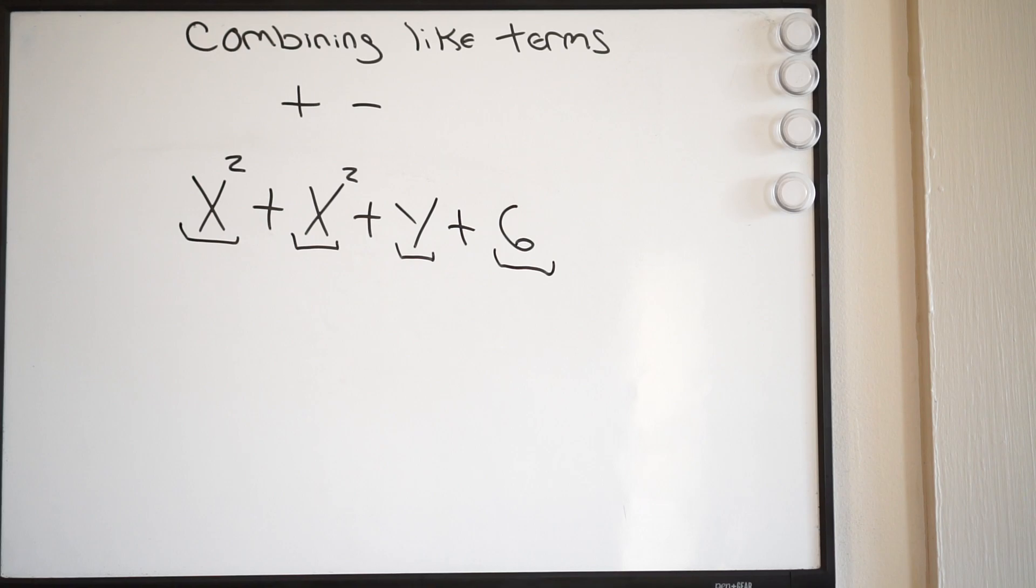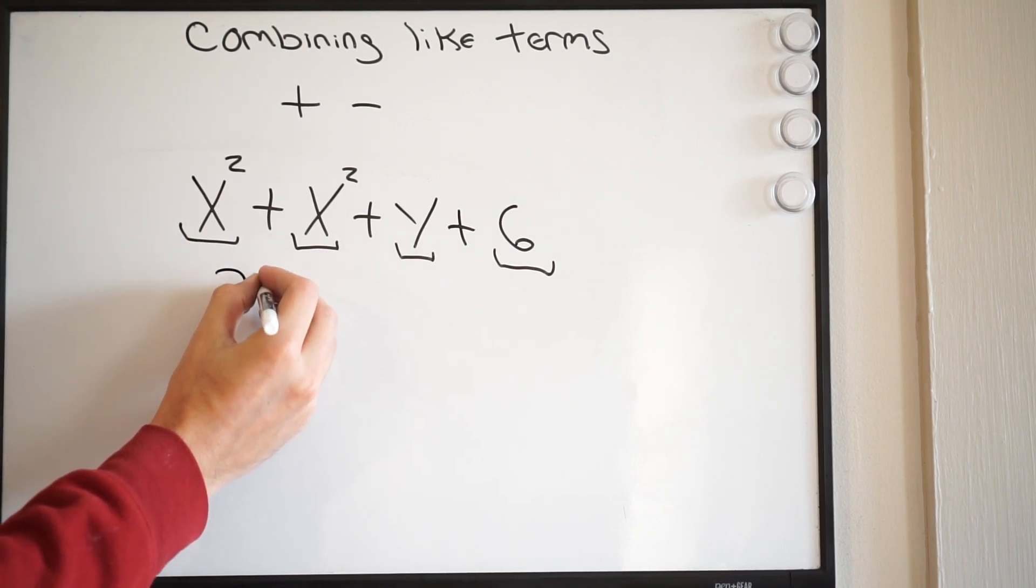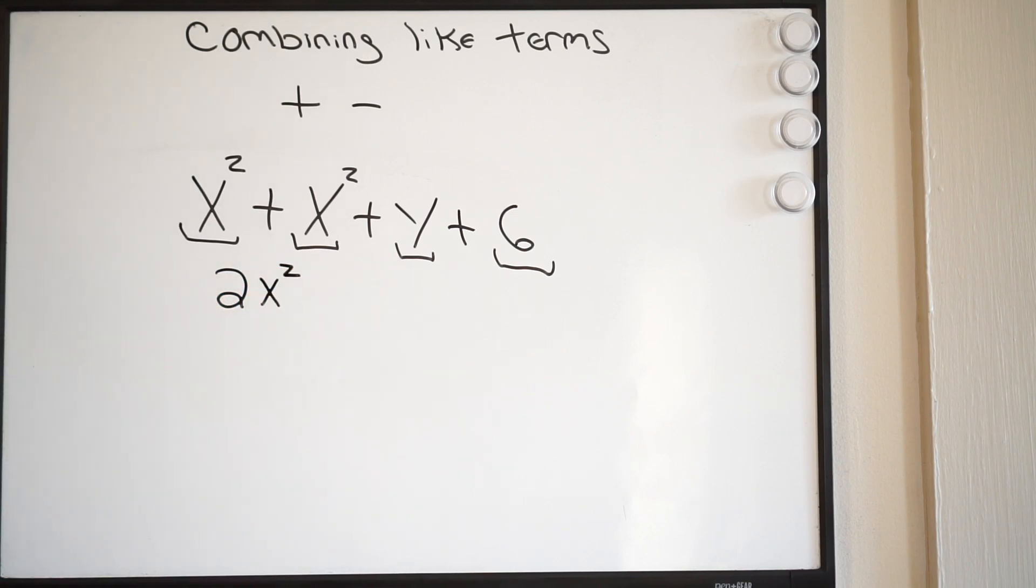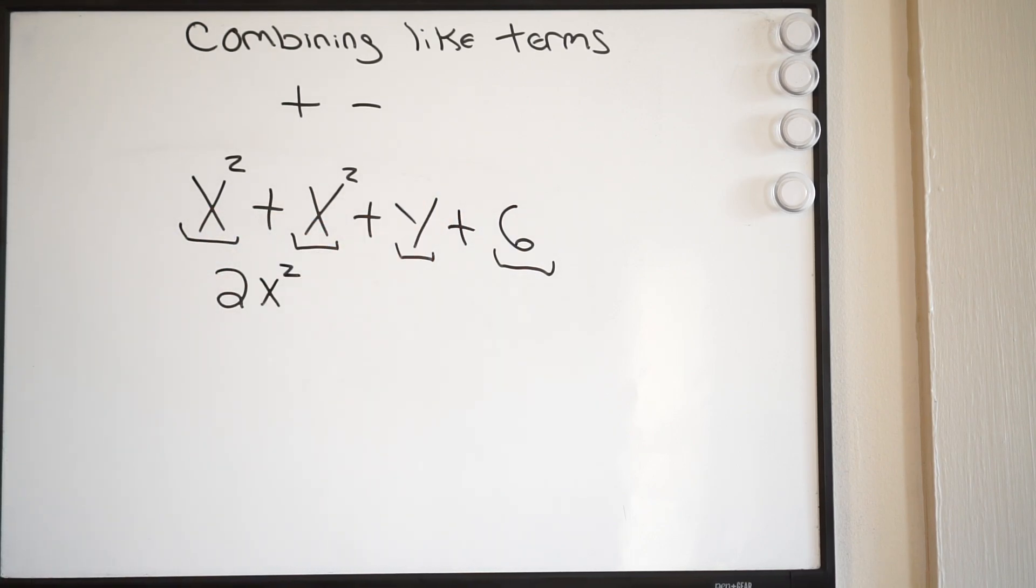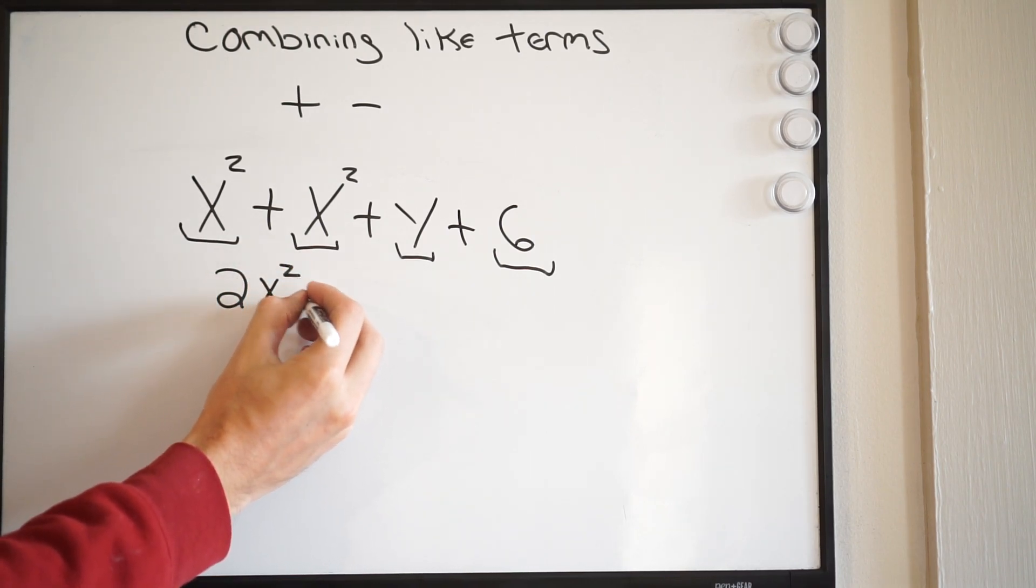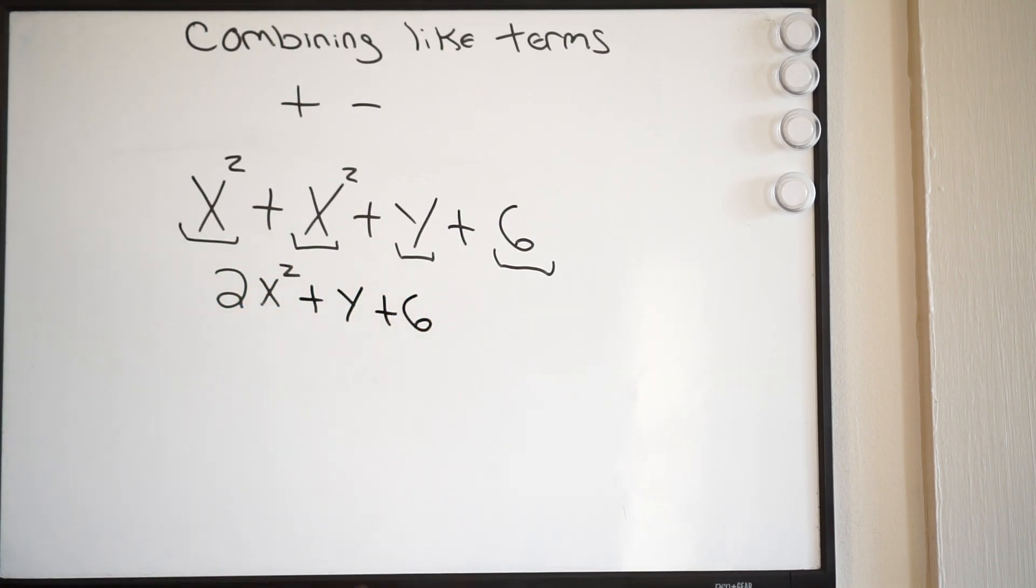Where are my like terms? Well, notice here. This x squared and x squared, those are like terms. When we combine them, what's an x squared plus an x squared? That's simply just going to be 2x squared. And then notice here I have y plus 6. Those are not like terms. I can't combine those, so I'm just going to write plus y plus 6. This here would be your final answer. You cannot go any further. So this problem would be complete.